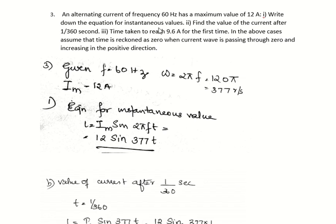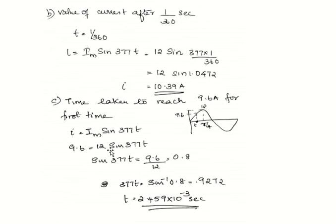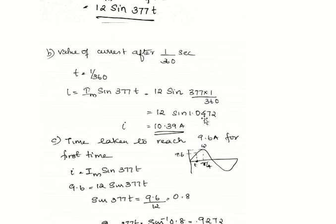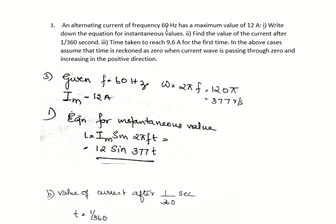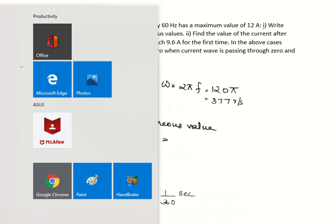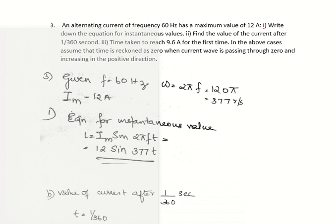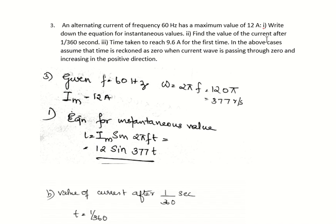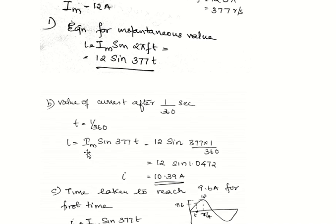The second part is to find the value of current after 1/360 second. The total time period is 1/60. Your aim is to find the current at t = 1/360 second. Using the equation I = IM sin 377t, substitute t = 1/360. You get I = 12 sin 1.0472, which gives 10.39 ampere.